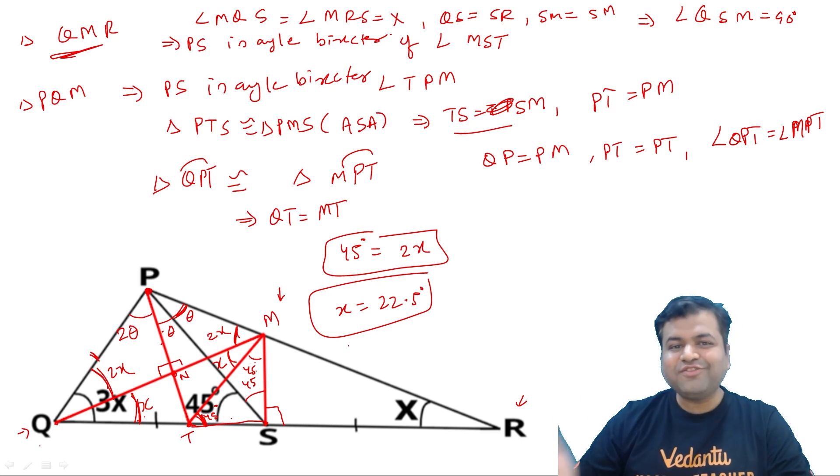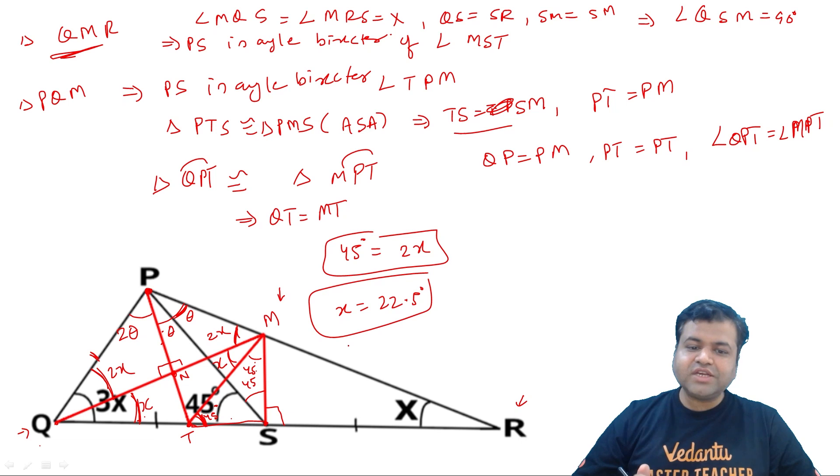So this is one of the geometry solution. Now you can see, challenging solution hai, achha solution hai. Bhoot kuch cheeze hai hame ismein karna padi hai. Kaafi 3-4 triangles congruent kar di. So it is not an easy solution. Achha solution tha. And in fact, IOQM level ki hisab se, agar hame sirf aur sirf pure geometry se karna ho, to I'll definitely rate this question of I guess 3 marks to 5 marks anything. 5 marks mein halka sa average count karunga, 3 marks mein haan, isko main achha portion karunga.